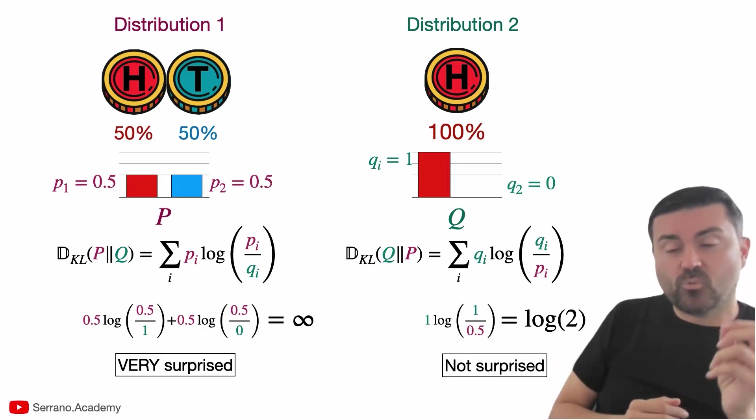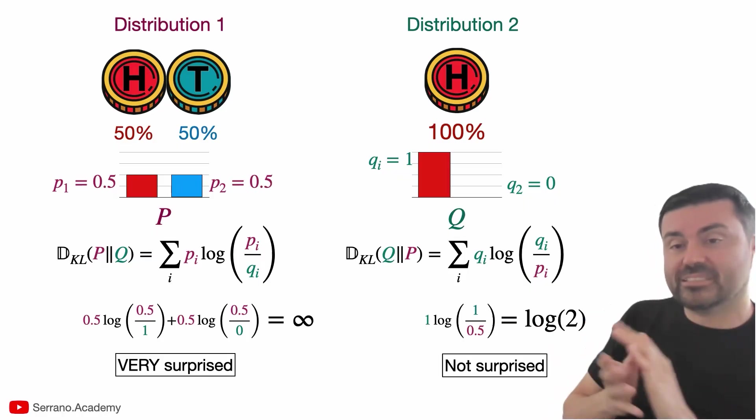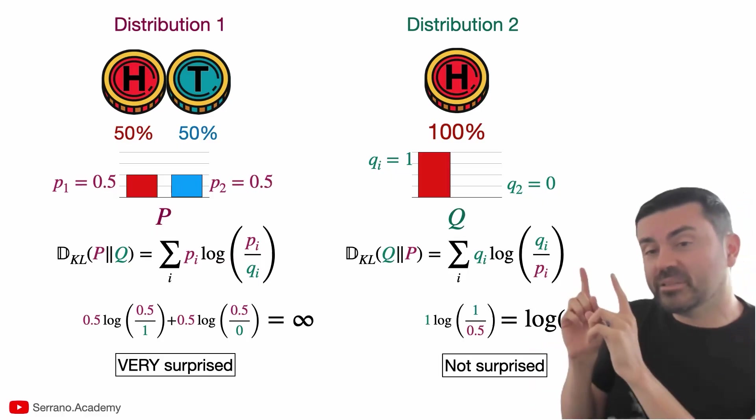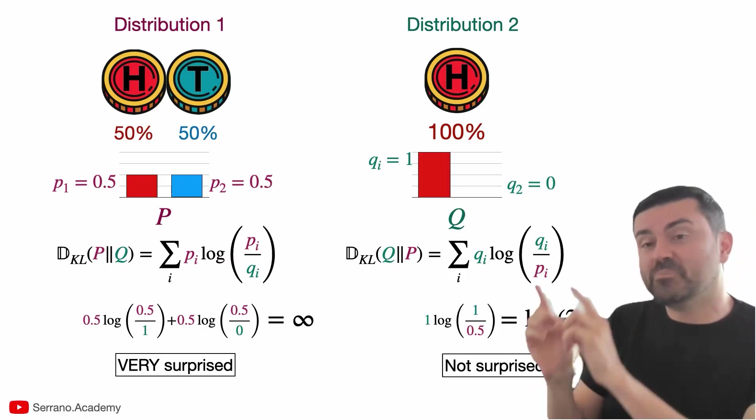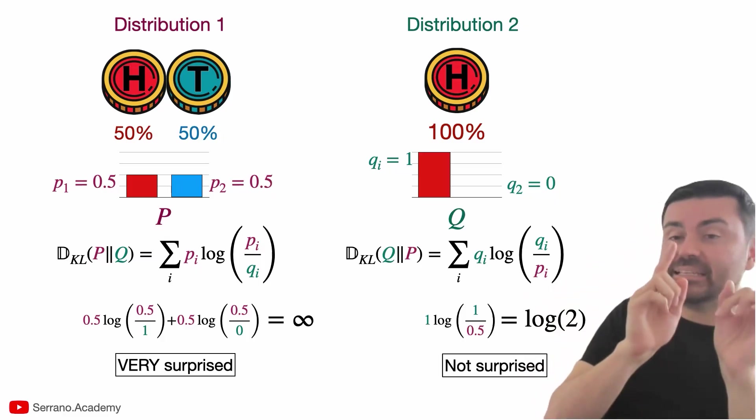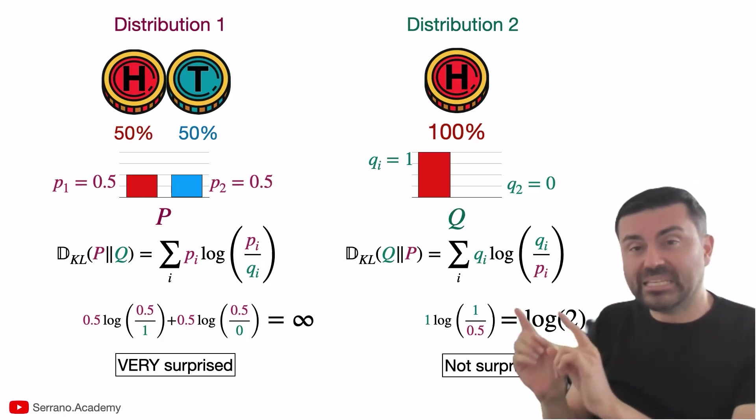And so that's it. That's an example of why KL divergence is not symmetric because it's not about how similar P and Q are as distributions. It's about how likely I'd obtain P by sampling from Q and how likely I might obtain Q by sampling from P. Those things have no reason to be the same.